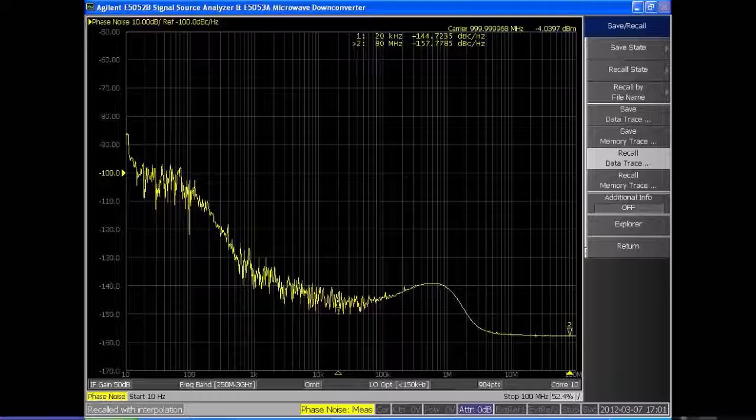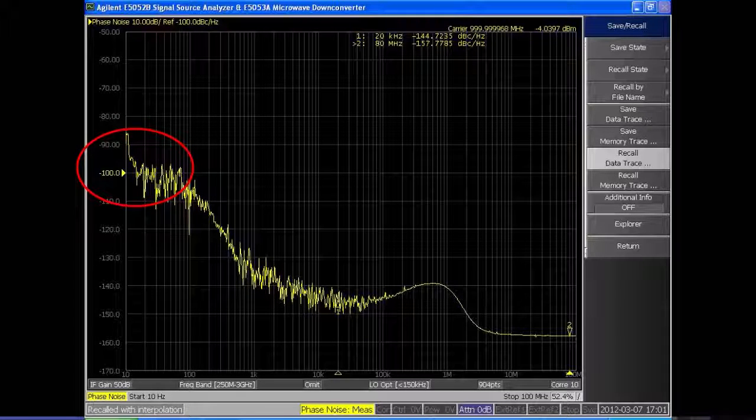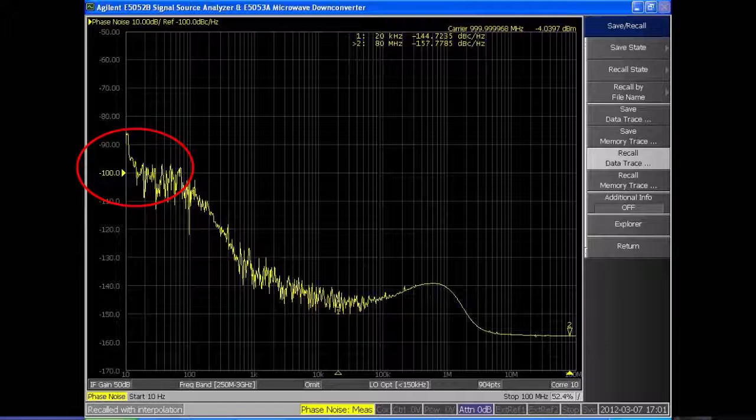We're looking at the close-in phase noise at 10 hertz offsets. We're seeing minus 100 dBc. That's 40 dB improvement on our first generation MXG that I just measured.